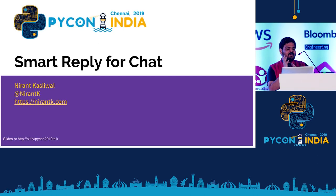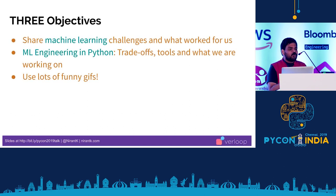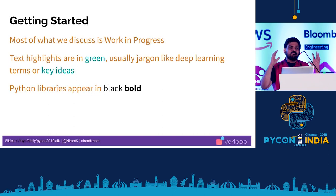I want to discuss what we are trying to do and how we are trying to do it. This is basically a system design talk, or how we think about formulating a machine learning problem specifically from a point of view of product. I have three objectives today: we are solving a problem, what machine learning challenges we have, how we are doing that with the Python ecosystem, and to use a lot of funny GIFs. The important ideas and concepts which you should know are in green color. Python libraries which we use to build our tooling are in black and bold.